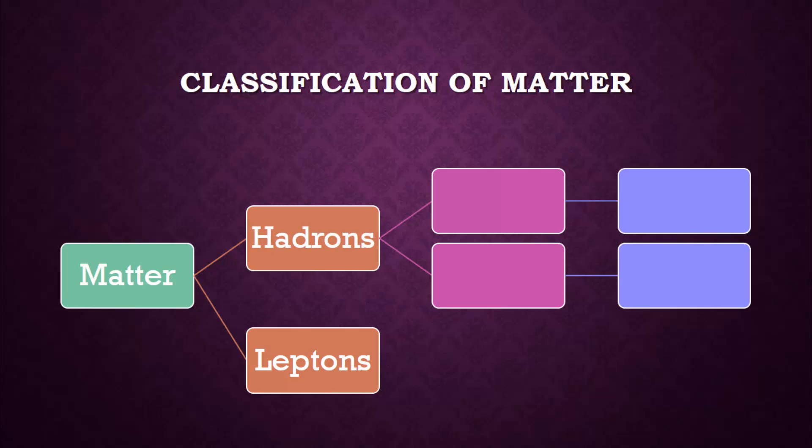Then we have hadrons. Hadrons are particles that are composed of quarks. There are two types of hadrons. The first are known as baryons. All baryons are made of either three quarks or three antiquarks.